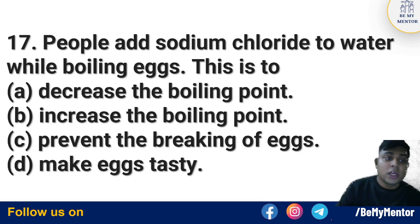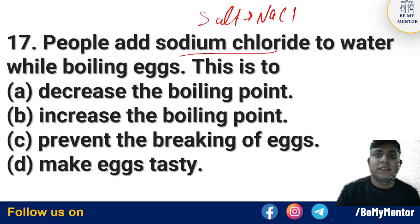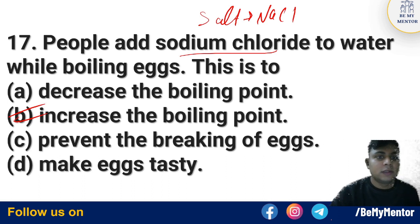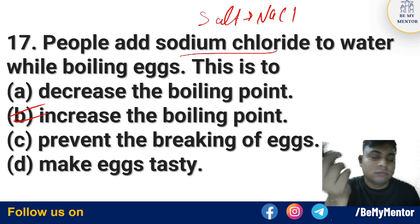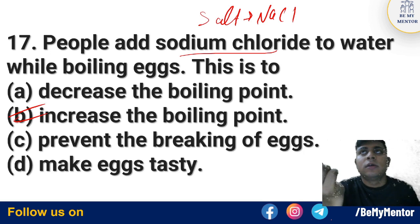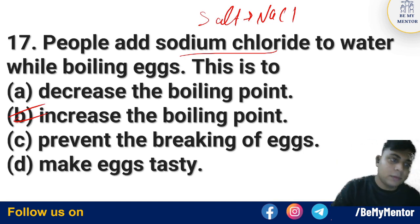Question number 17: People added sodium chloride (NaCl, salt) to water. If you boil an egg and add NaCl, the reason is to increase the boiling point. The option about decreasing is not correct — it is because of increasing the boiling point. Additionally, salt is mixed with ice to lower its freezing point, which is another related application.